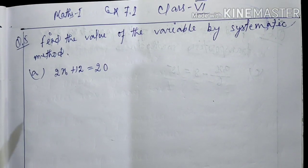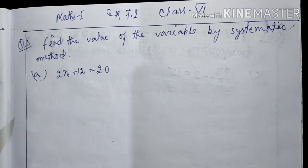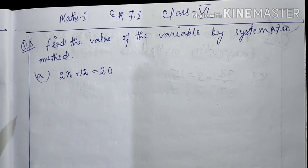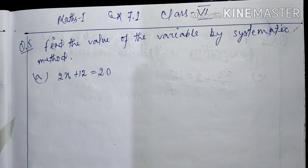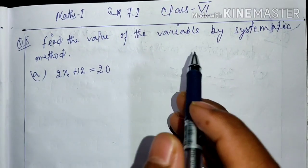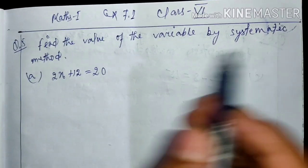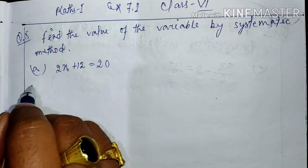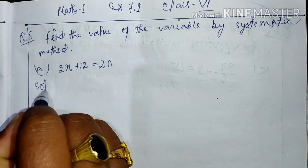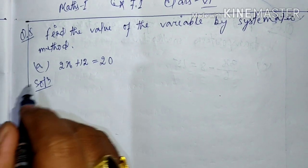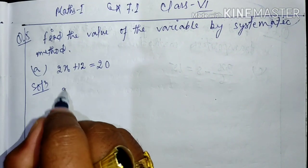Hello children, today we are going to solve exercise 7.1, question number five — find the value of the variable by systematic method. Let's start solving. This is the systematic method — how to solve it.